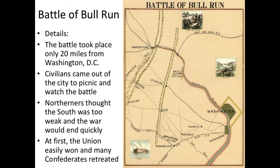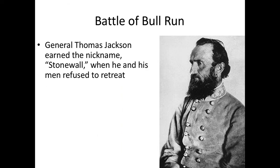When the battle first begins, the Union is going to do what the Northern citizens expected — winning very easily at first, with many Confederates beginning to retreat. This can be compared to a sports game where during the first half one team is dominating, but then after halftime the losing team makes a comeback and ends up winning. In this battle, the person who helps lead that second-half comeback is going to be a man named Thomas Jackson.